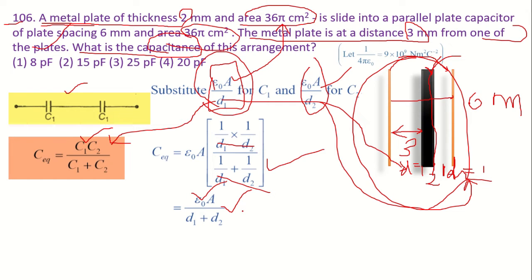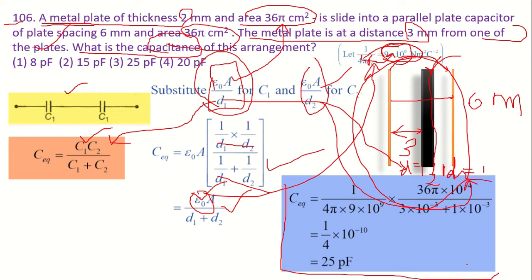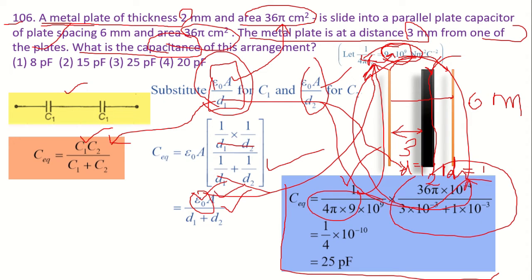Now we know all the values so we can substitute. ε0 is given indirectly in the question as 1/(4π·ε0) = 9×10⁹, so ε0 = 1/(4π × 9×10⁹). Substituting: area is 36π×10⁻⁴ m², and D1 + D2 = 3×10⁻³ + 1×10⁻³ m. This gives us the final capacitance value.